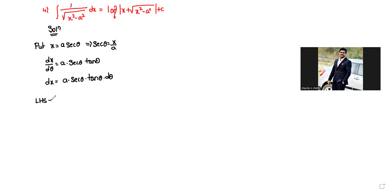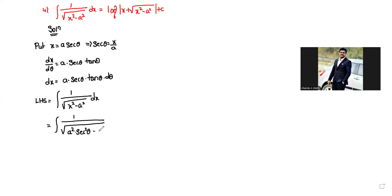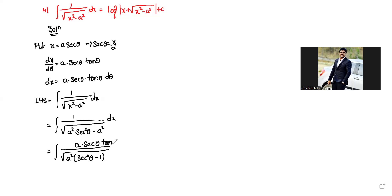I am taking LHS: integral 1 by square root of x square minus a square dx. Applying the x value here, we observe integral 1 by square root of a square into secant square theta minus a square dx, taking a square common: a square of secant square theta minus 1.